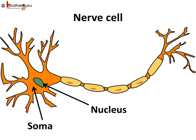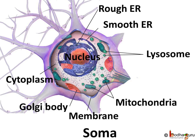The nerve cells are the longest cells in our body, which literally look like a string. Each nerve cell has a cell body, or soma, with a nucleus. A nerve cell has many organelles like endoplasmic reticulum, ribosome, mitochondria, Golgi apparatus, lysosome, etc.